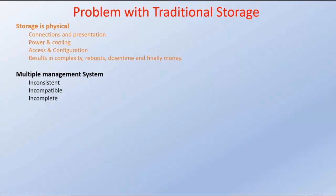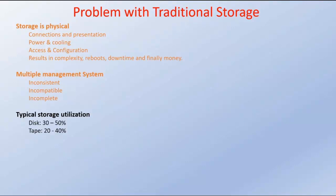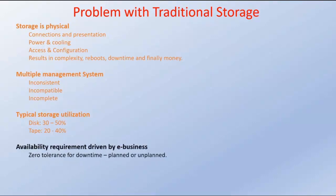Moving to the next problem with the traditional storage devices, what we have is the typical storage utilization. The typical storage utilization for the disk is hardly 30 to 50 percent in traditional storage devices. For the tape, it is hardly 20 to 40 percent. Because of these three problems — storage being physical, multiple management system, and typical storage utilization — the availability requirement driven by e-business is not fulfilled by the traditional storage devices.